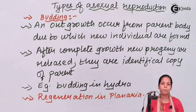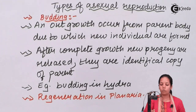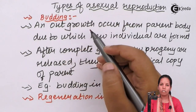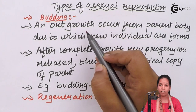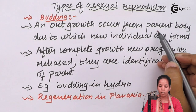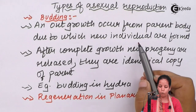The most common type of Asexual Reproduction is budding, which happens in Hydra. Budding in Hydra occurs as an outgrowth on the pre-existing parent body. Once this outgrowth is formed and further develops, new individuals are formed.